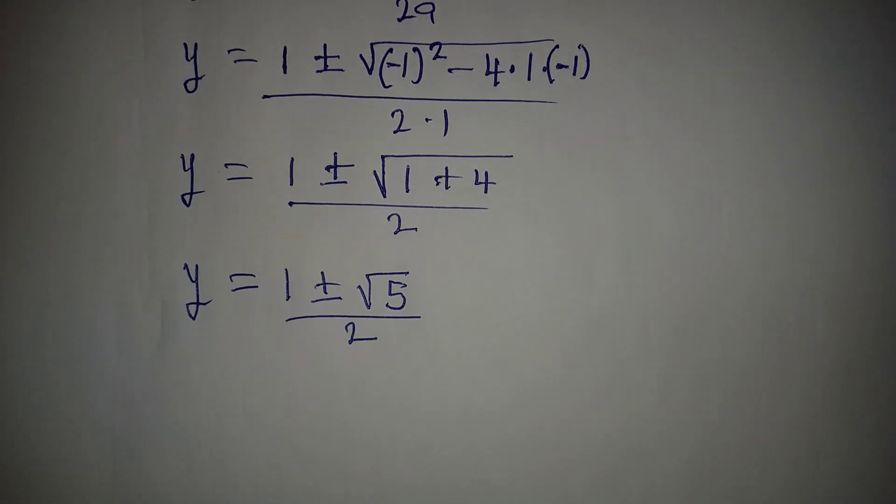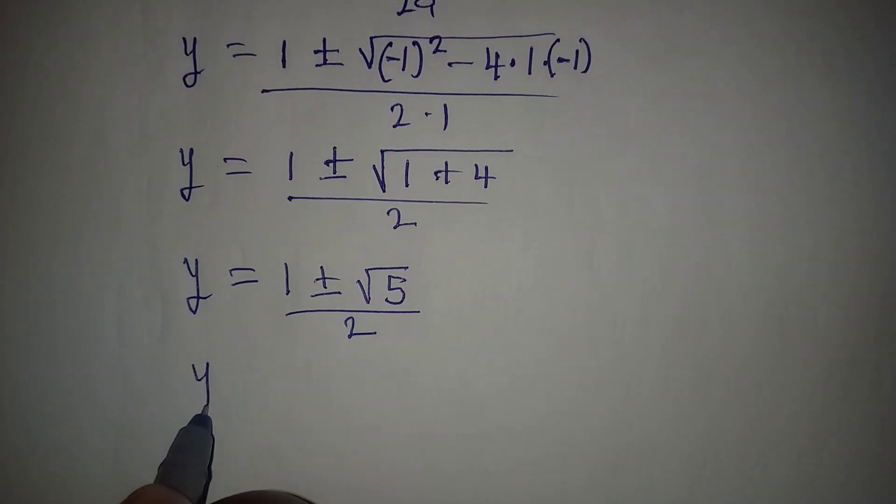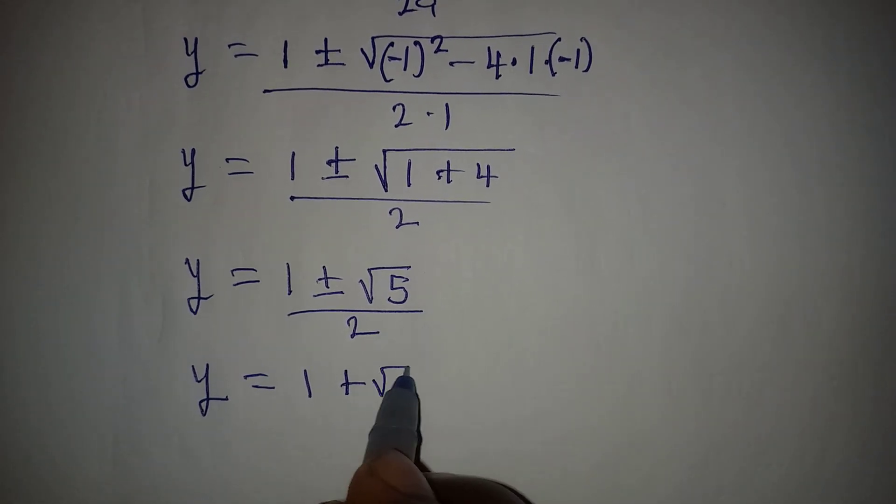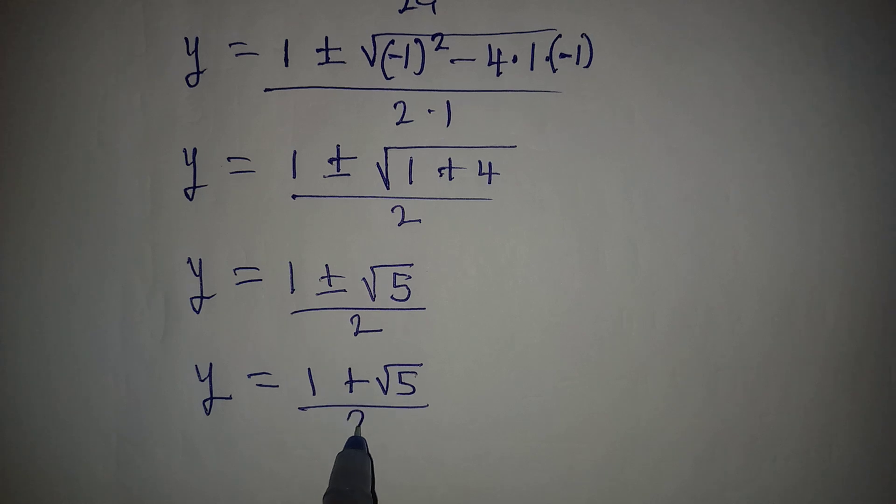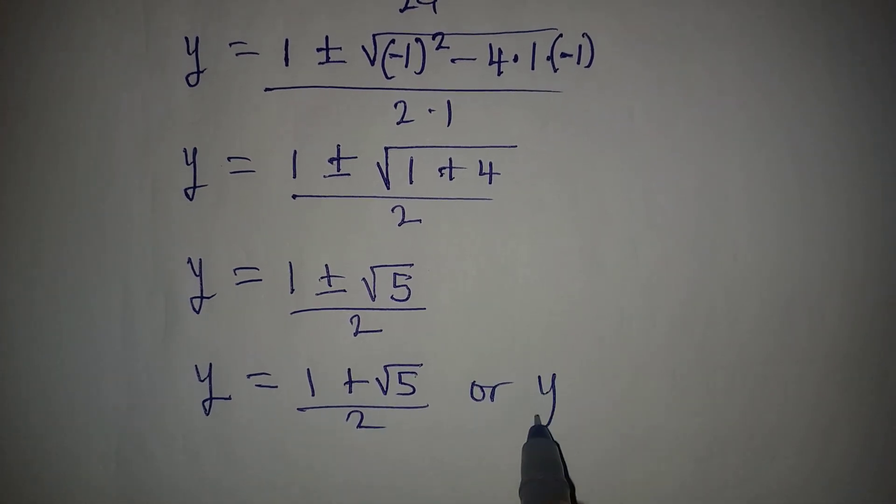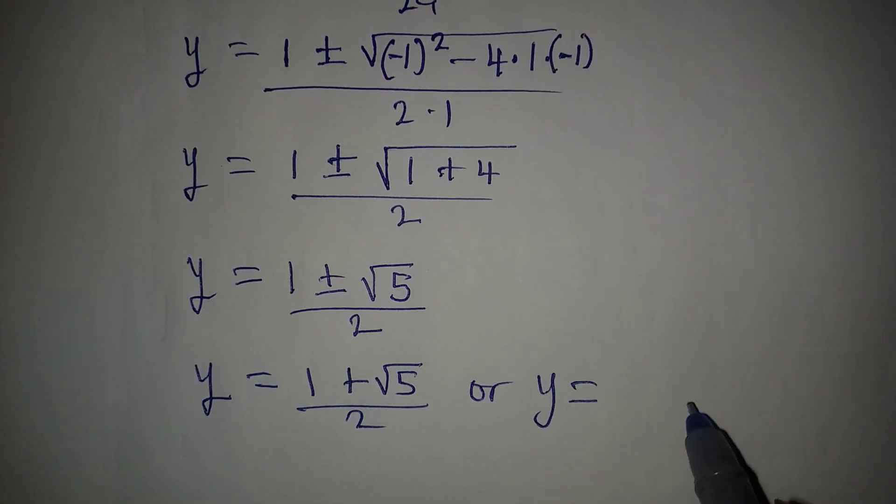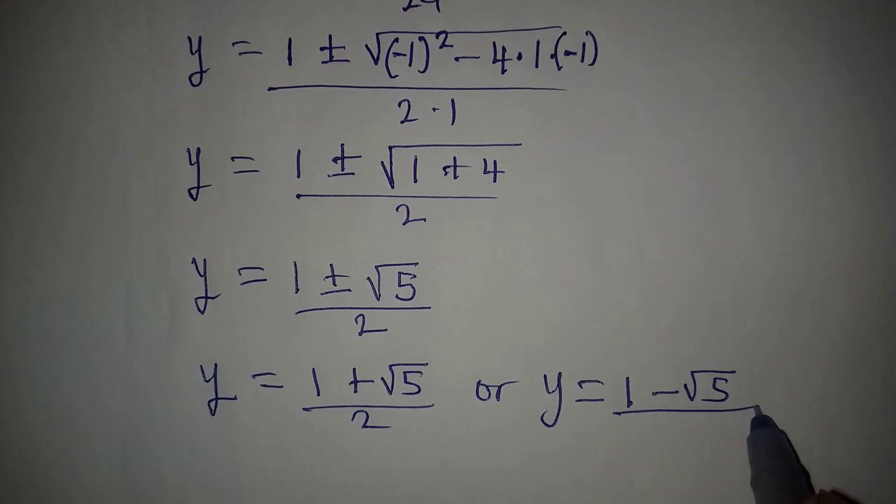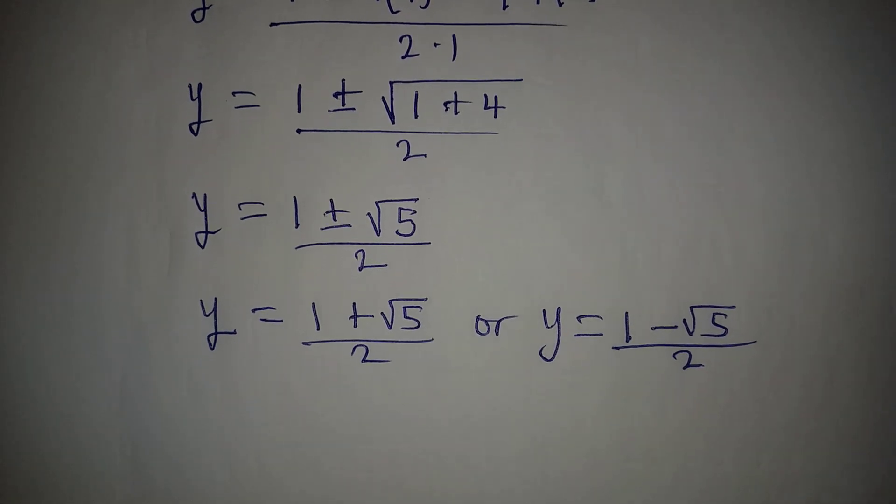So we can split this again as we have y to be equal to 1 plus square root of 5 over 2, or y is equal to 1 minus square root of 5 over 2.